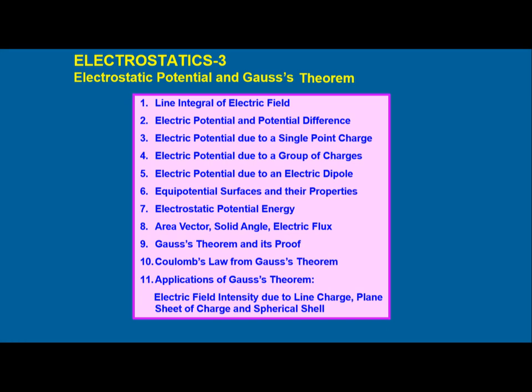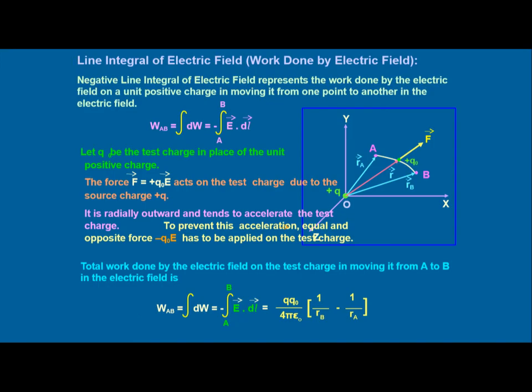This video may be long enough so we will try to split these lectures into small videos. Let's discuss the line integral of electric field. As discussed in our last lecture, the field of anything is representable in terms of force per unit charge. The electric field basically comes from the work done, and it is the line integral of electric field — specifically, the negative line integral of electric field represents the work done by the electric field on a unit positive charge moving from one point to another.